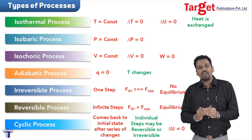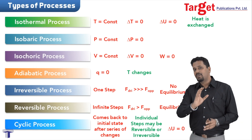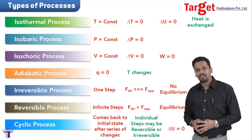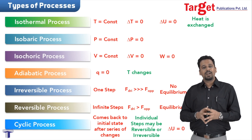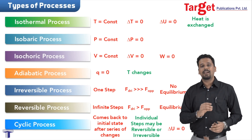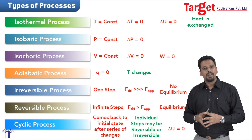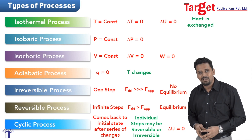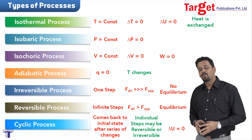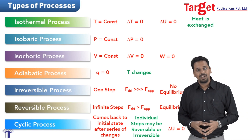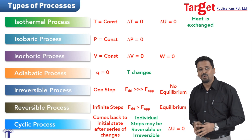To summarize the cyclic process: the system comes back to its initial state after a series of changes, there is no change in internal energy, and the individual steps may be reversible or irreversible. These are all the processes we need to know in thermodynamics — isothermal, isobaric, isochoric, adiabatic, irreversible, reversible, and cyclic. In the next part, we will start our discussion on internal energy. Thank you so much for watching.